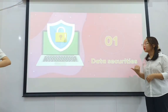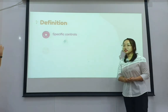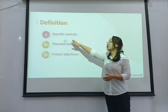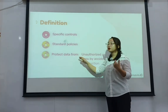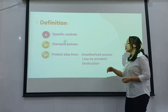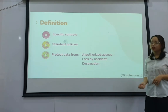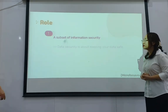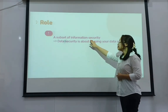Now we go to part 1, data security. Data security involves introducing specific controls, standard policies, and procedures to protect data from a wide range of problems including unauthorized access, accidental loss, and destruction. There are two roles of data security. First, for individuals, it is a subset of information security.